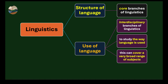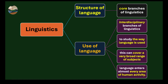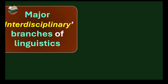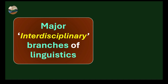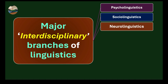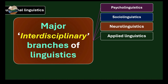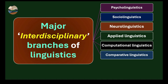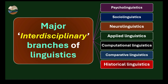The use of language covers a very broad range of subjects because language enters almost every area of human activity. The major interdisciplinary branches of linguistics are: psycholinguistics, sociolinguistics, neurolinguistics, applied linguistics, computational linguistics, comparative linguistics, historical linguistics, and stylistics. There are many other interdisciplinary branches, but these are the major ones.